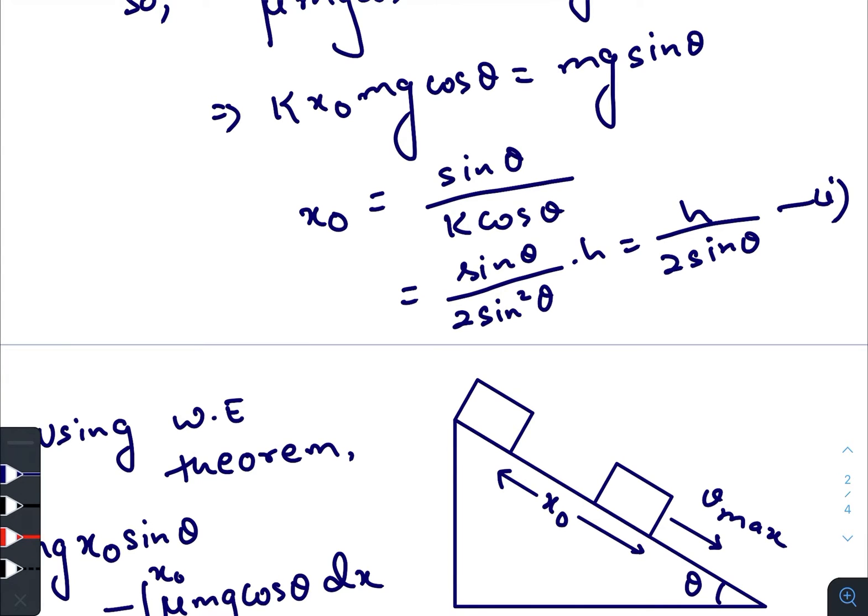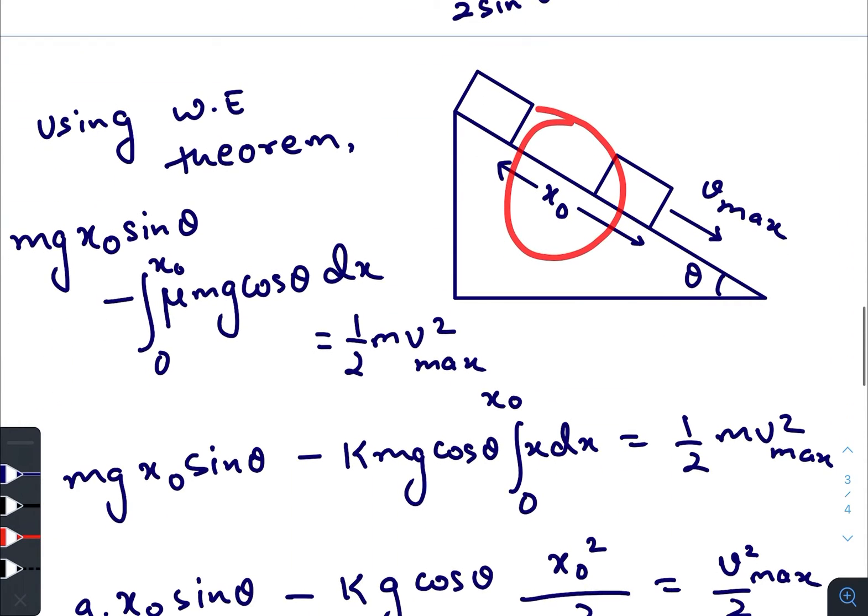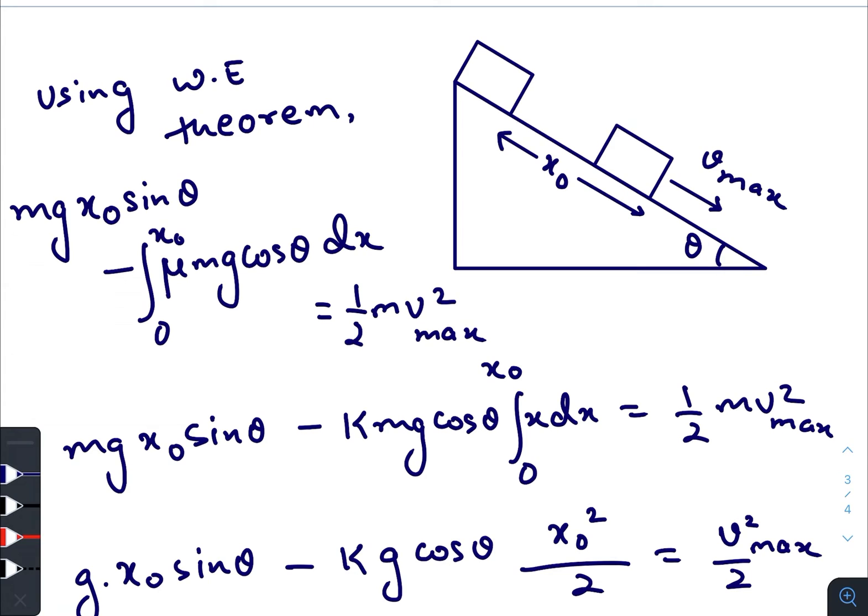Now our target is to find the maximum speed, that means the speed at x equals x₀. So again we have started from the initial situation where kinetic energy initial is zero, and in our final situation the maximum speed will happen, that means the maximum kinetic energy will happen.